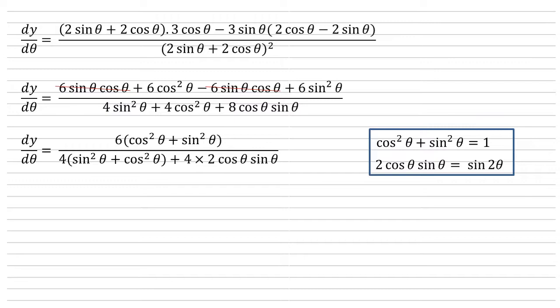Similarly for the last part of the denominator we're going to take that 4 out as well to leave us with 4 times 2 cos theta sine theta. We can now replace our cos squared plus sine squared and our 2 cos sine with our identities.